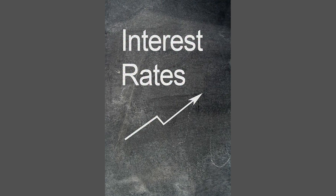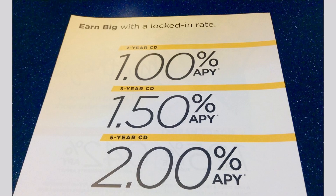Interest rates are the cost of borrowing money or the return on lending money. In other words, it is the percentage of the loan amount that the borrower pays to the lender as compensation for the use of the money. Interest rates are expressed as an annual percentage rate (APR). For example, if you borrow $10,000 at an interest rate of 5%, you will have to pay back $10,500 at the end of the year. The $500 is the interest you are paying for the use of the money.